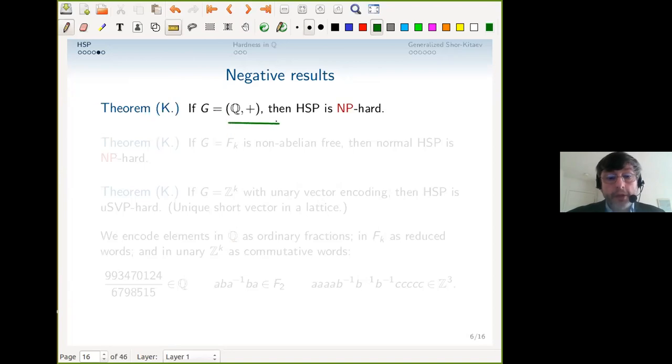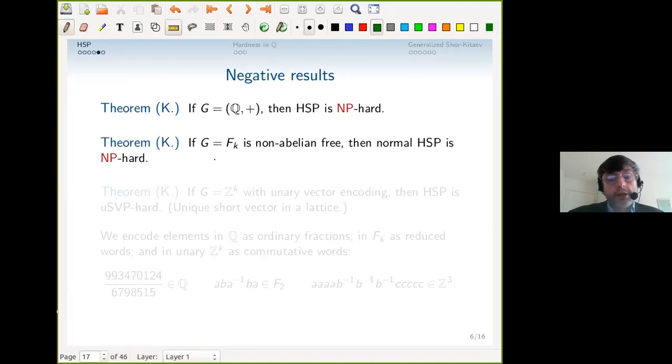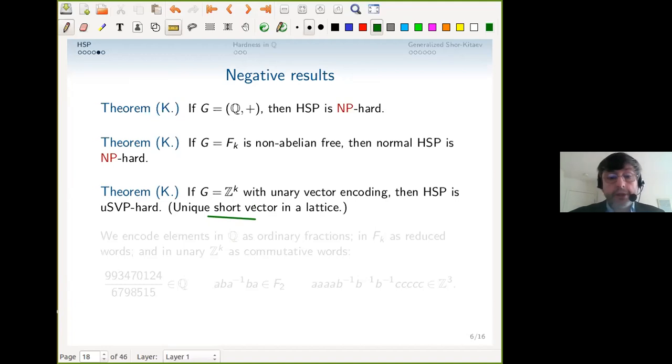Let me summarize my results. We all know about the integers. How about the rational numbers? The hidden subgroup problem is NP-hard, even relative to an oracle. If G is a non-abelian free group, then even the normal hidden subgroup is NP-hard, in contrast to the finite case.